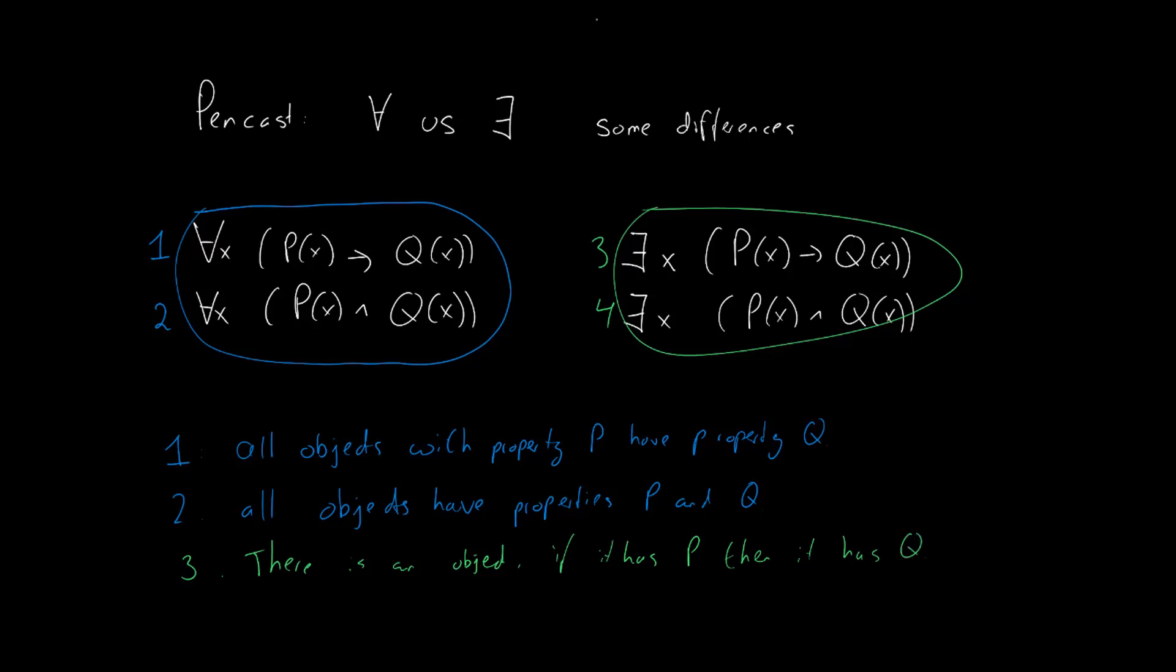Now consider an object x that does not have property p. What happens to this statement? Well this statement is still true because p of x is false for our x and therefore the implication holds. So this implication I would argue is a relatively useless statement.